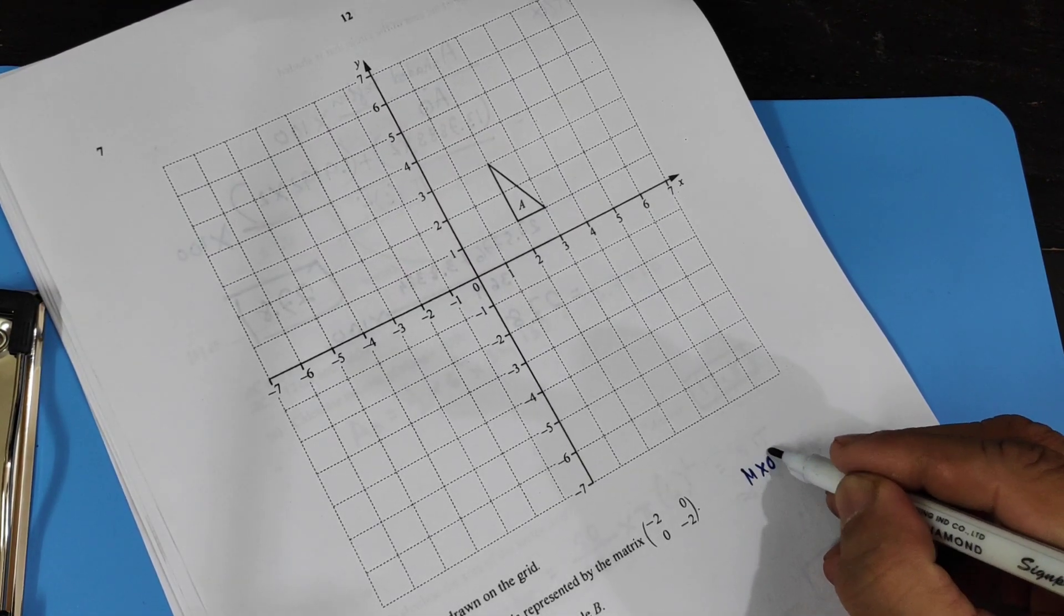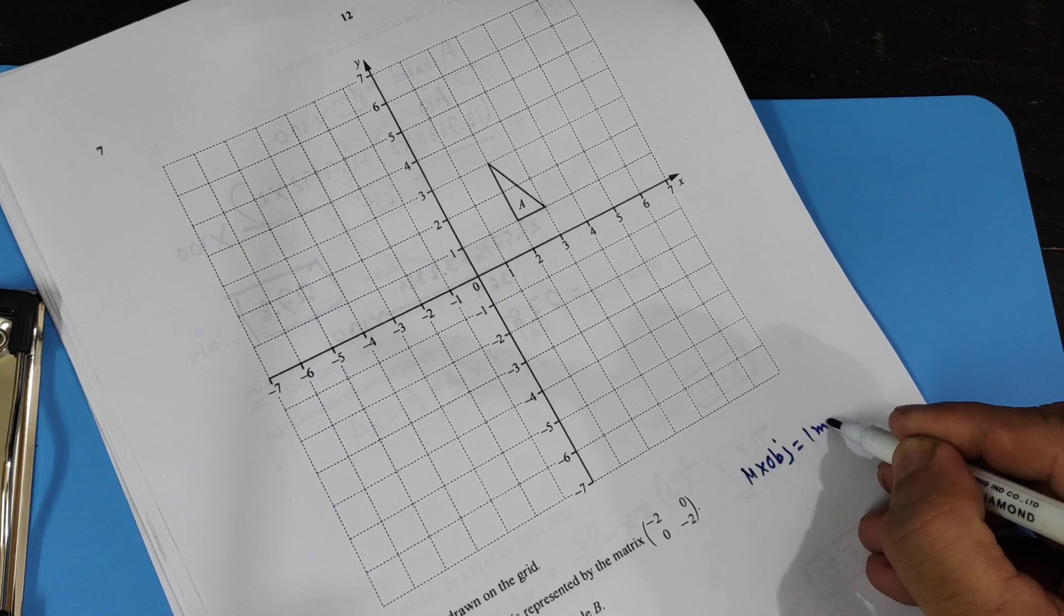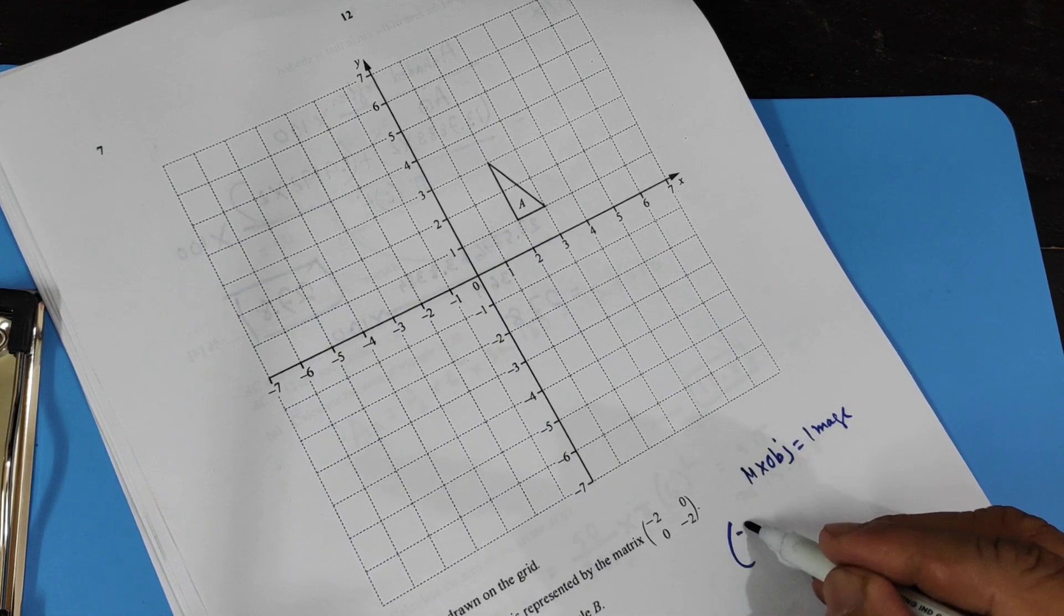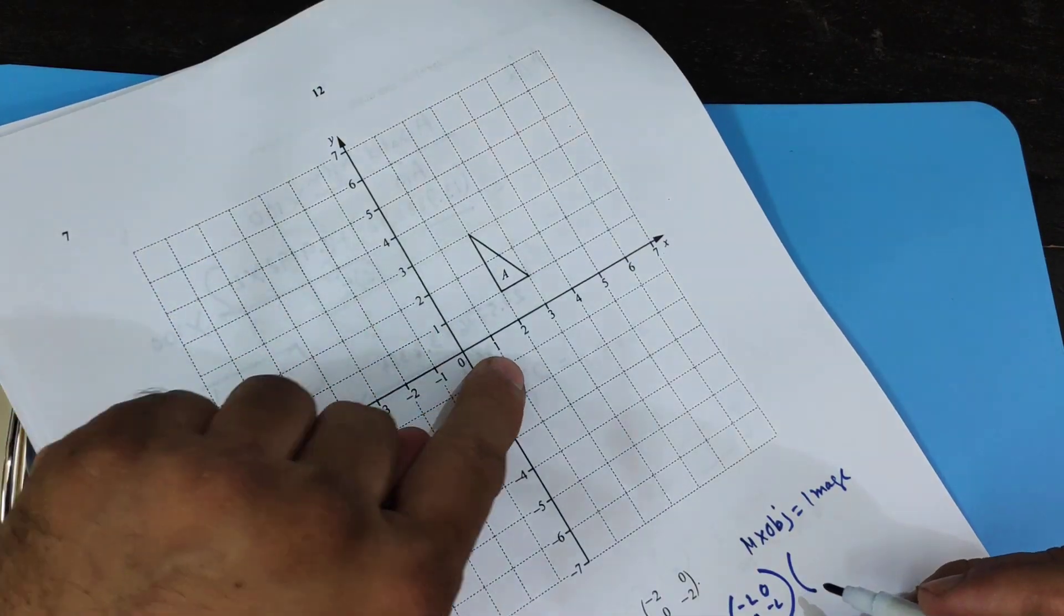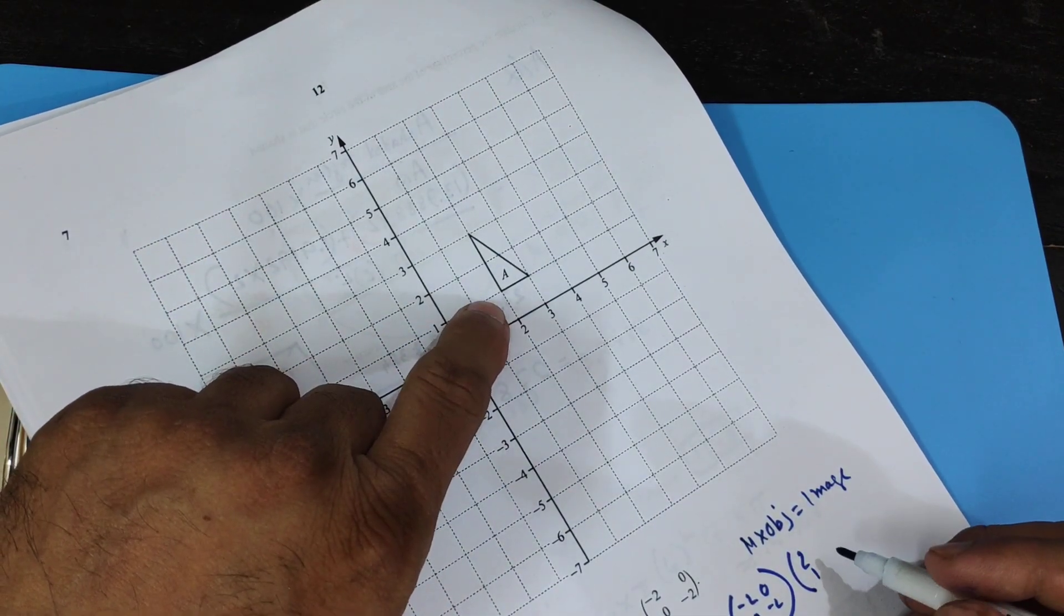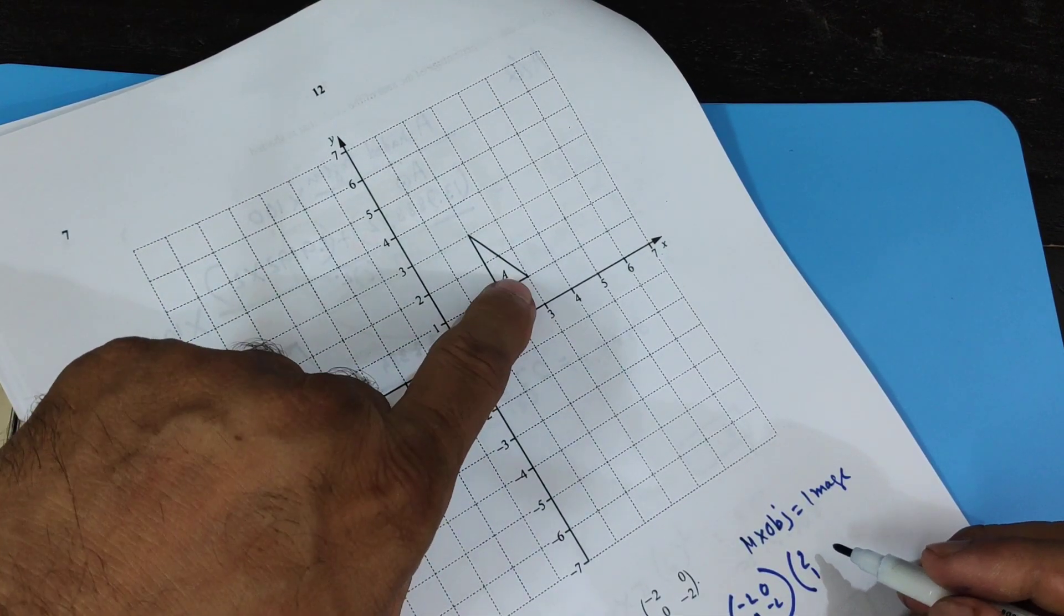You can multiply matrix times object equal to image. You can use this formula. So matrix is minus two, zero, zero, minus two, and this is gonna be two one, the coordinates of that, then three one, and then two three.